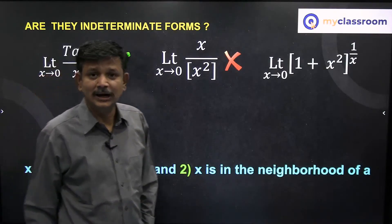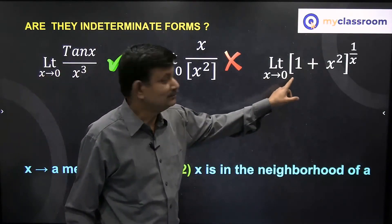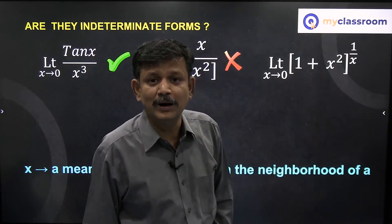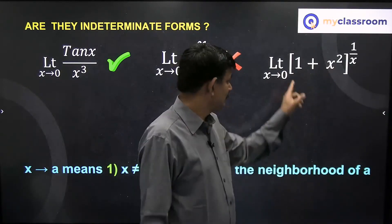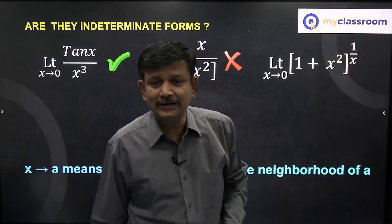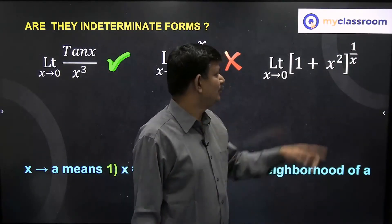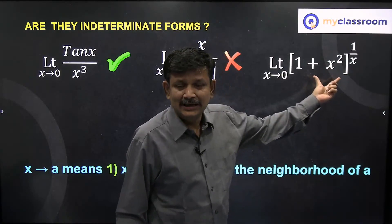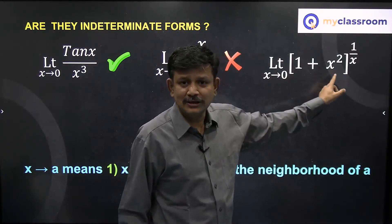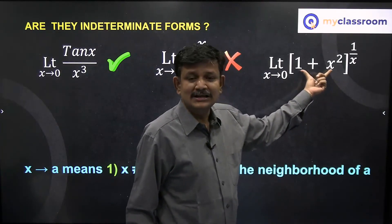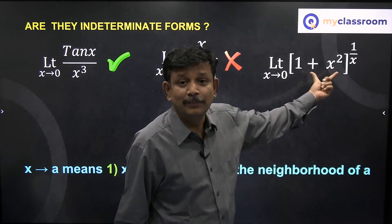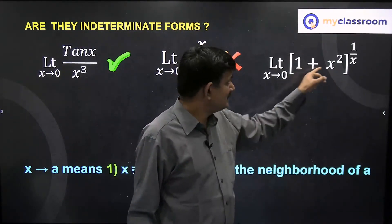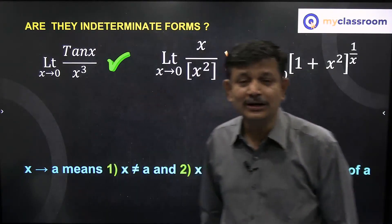Consider the limit as x tends to 0 of the integer part of (1 + x²) raised to the power 1/x. The power 1/x is approaching infinity or minus infinity. But what is the base? As x approaches 0, x² is a small positive number, so 1 + x² is slightly greater than 1, and the integer part of that is exactly 1 — not approaching 1, but equal to 1. So this is not an indeterminate form 1 power infinity.